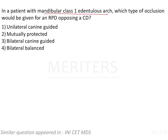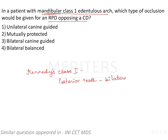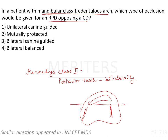A patient with a mandibular Kennedy Class 1 edentulous arch — which type of occlusion would be given for an RPD opposing a complete denture? Kennedy Class 1 means posterior teeth are missing bilaterally, so anterior teeth are present and posterior areas are edentulous on both sides. The opposing maxillary arch is a complete denture.